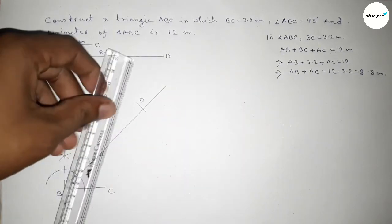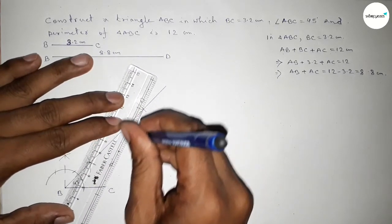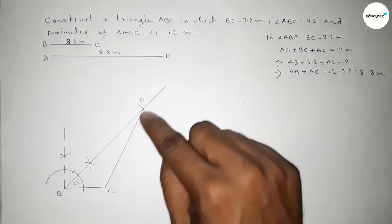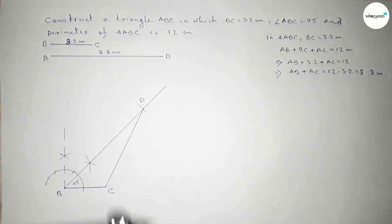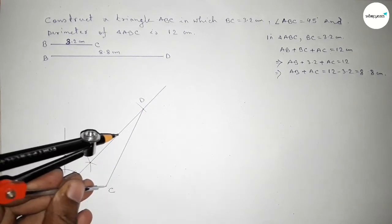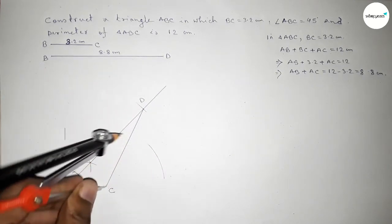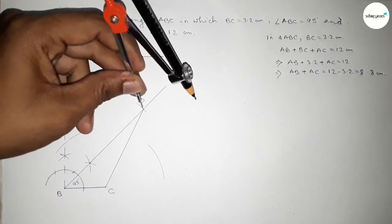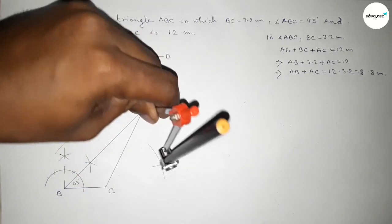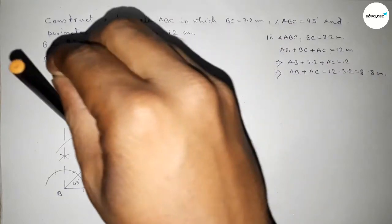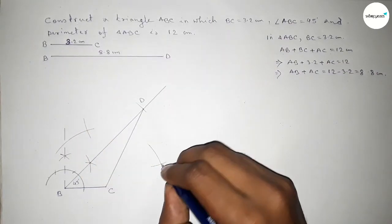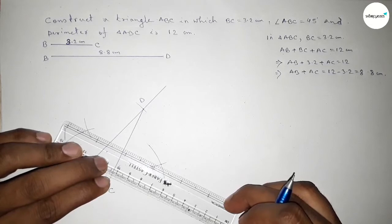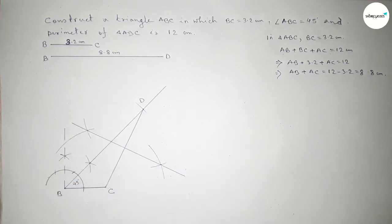Now joining D and C. Next, bisecting the line CD: putting the compass here, taking greater than half of CD, and drawing an arc. Then putting the compass at the other end and cutting arcs on both sides. Both curves intersect at two points. Joining this perpendicular bisector line.